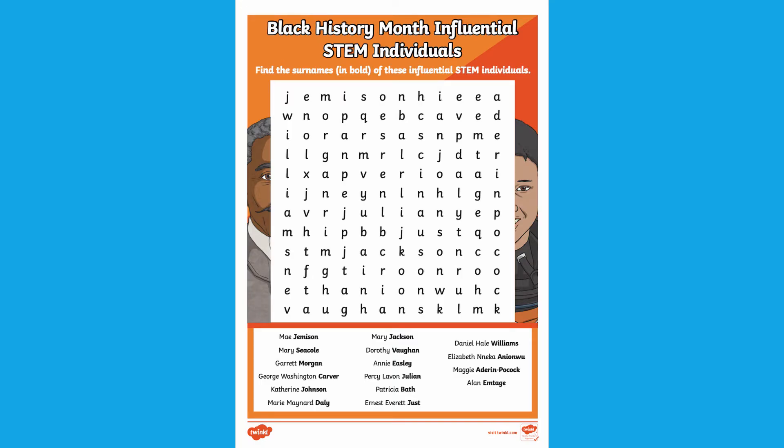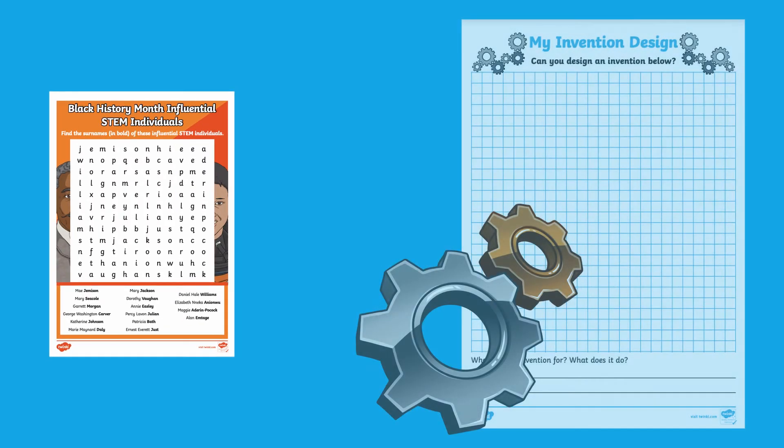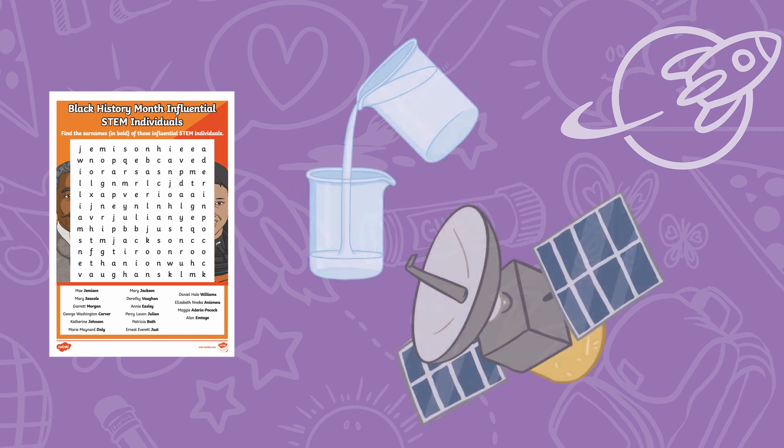Why not use the influential STEM word search to inspire a DT lesson. Once children have learned about the achievements of these STEM figures, why not get children creating their own invention inspired by their achievements. Or carry out a science investigation linked to the area of science that has been impacted by one of these important individuals.